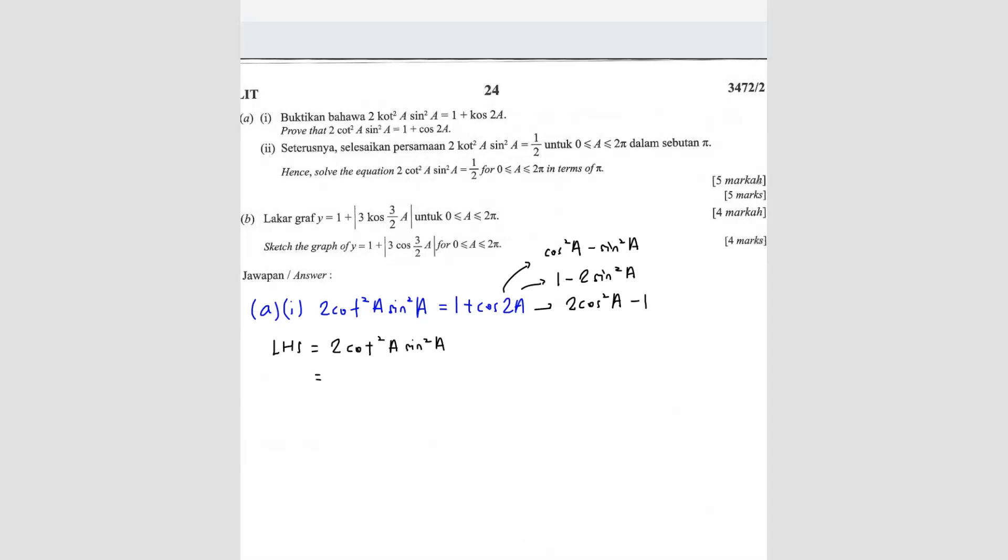So cot is also equals to cos over sine. So we can change it to cos square A over sine square A, multiply by sine square A. And then you notice there are two signs here, so you can actually eliminate them.